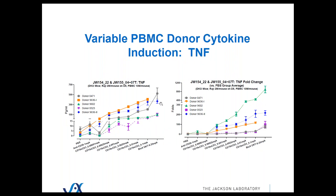TNF — once again we're seeing these differential picogram per mL increases as well as fold differences between different individuals. The fold increase here is obviously pretty significant between donor 9602 and some of the other donors.